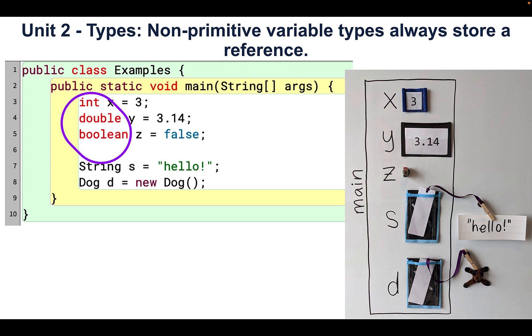All primitive types start with a lowercase letter, and by convention, reference types start with a capital letter. Later, we'll learn more about arrays, which are also a reference type with a slightly different syntax.